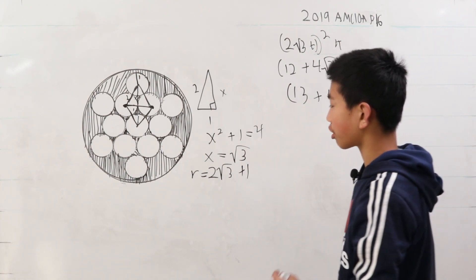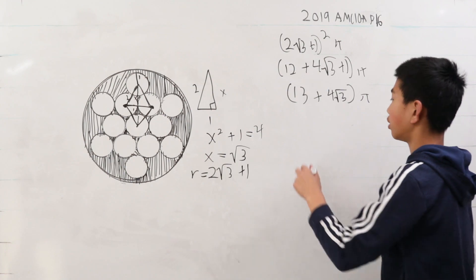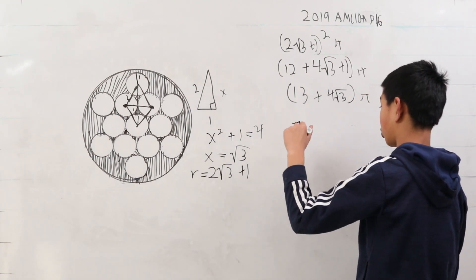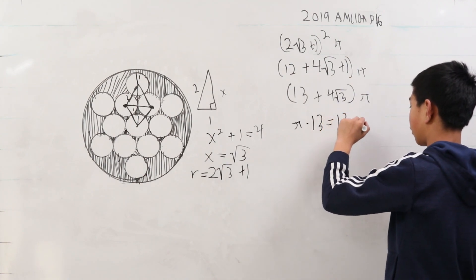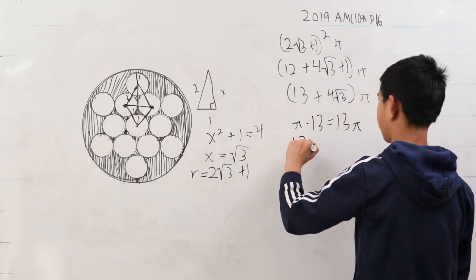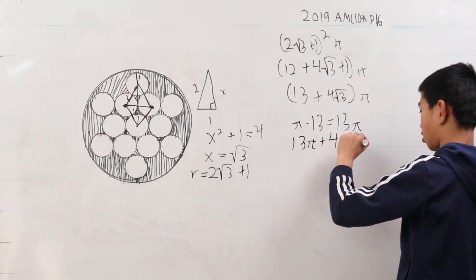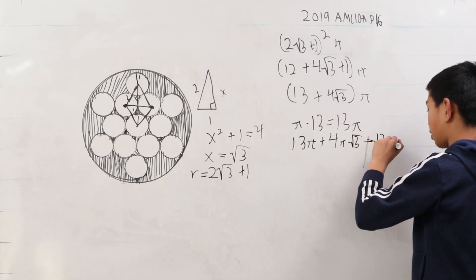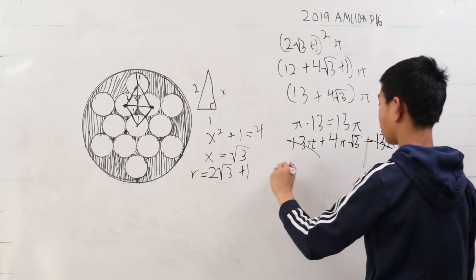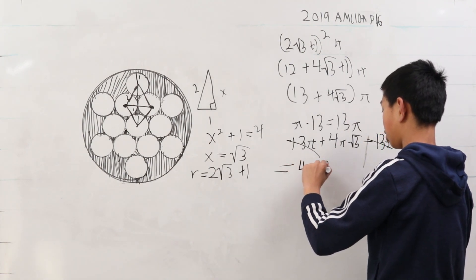Now we want to subtract the area of all these white circles. Since the area of one of them is Pi times 1 squared, that's Pi times 13, the area is 13 Pi for all of them. So 13 Pi plus 4 Pi root 3 minus 13 Pi is going to be our answer, which is 4 Pi root 3.